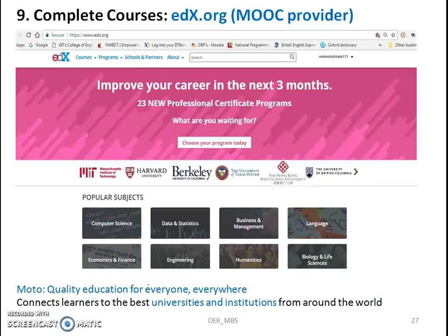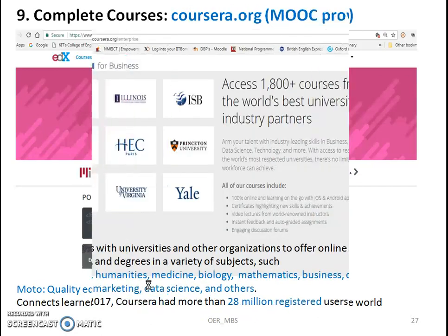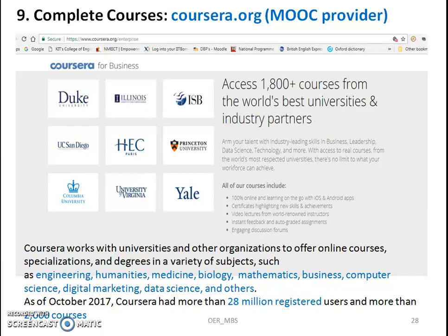For complete courses, edX.org is a MOOC platform — that is, a Massive Open Online Course platform — where you will find different courses available. Coursera.org is another MOOC platform where around 1,800 plus courses from the world's best universities are available, and you can subscribe to those courses and learn.